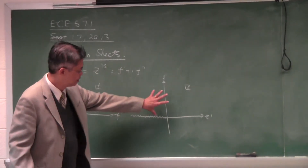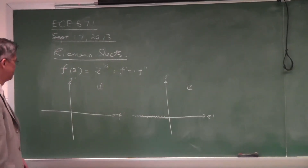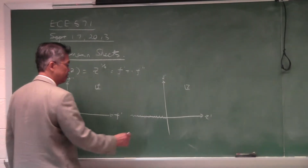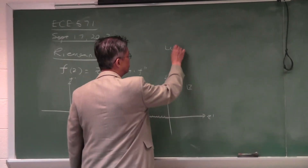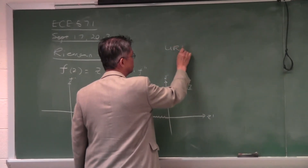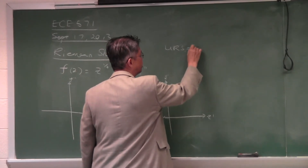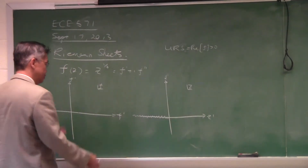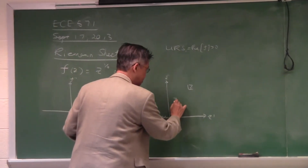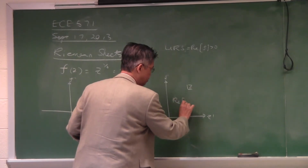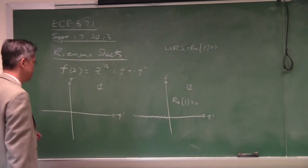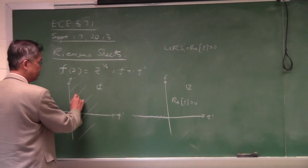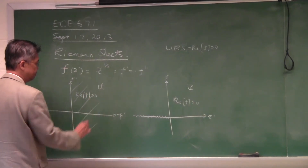I just pass two Riemann sheets around — the upper Riemann sheet and the lower Riemann sheet. The upper Riemann sheet maps to the right half plane; the upper Riemann sheet has real of f greater than zero. That's one way to perform the mapping. So every point on the upper Riemann sheet is mapped to the right half plane where real of f is larger than zero.